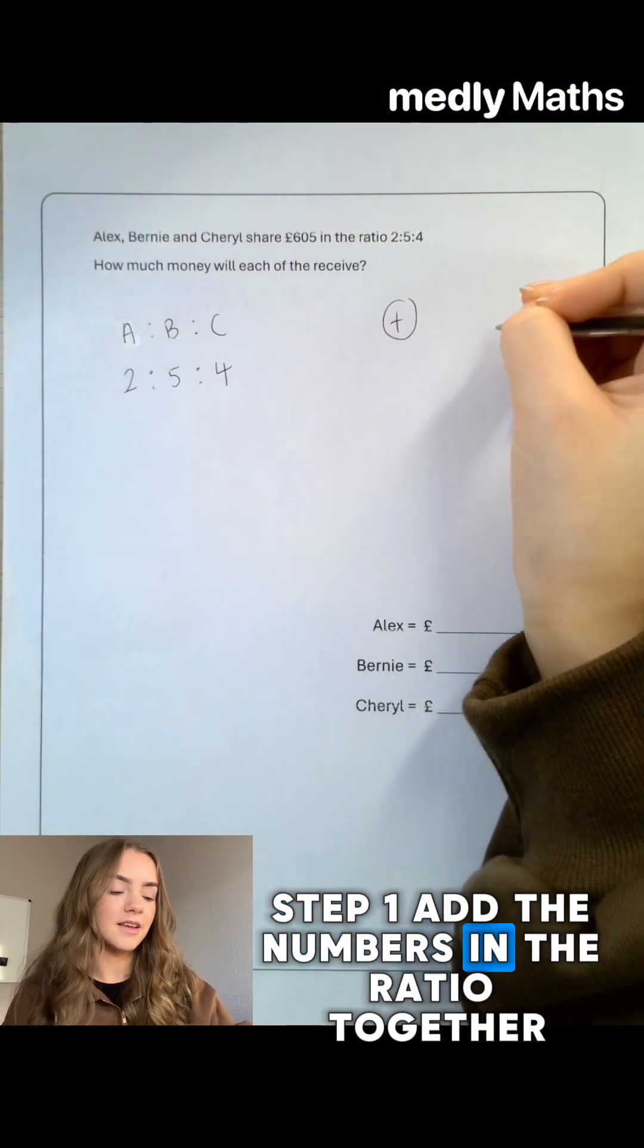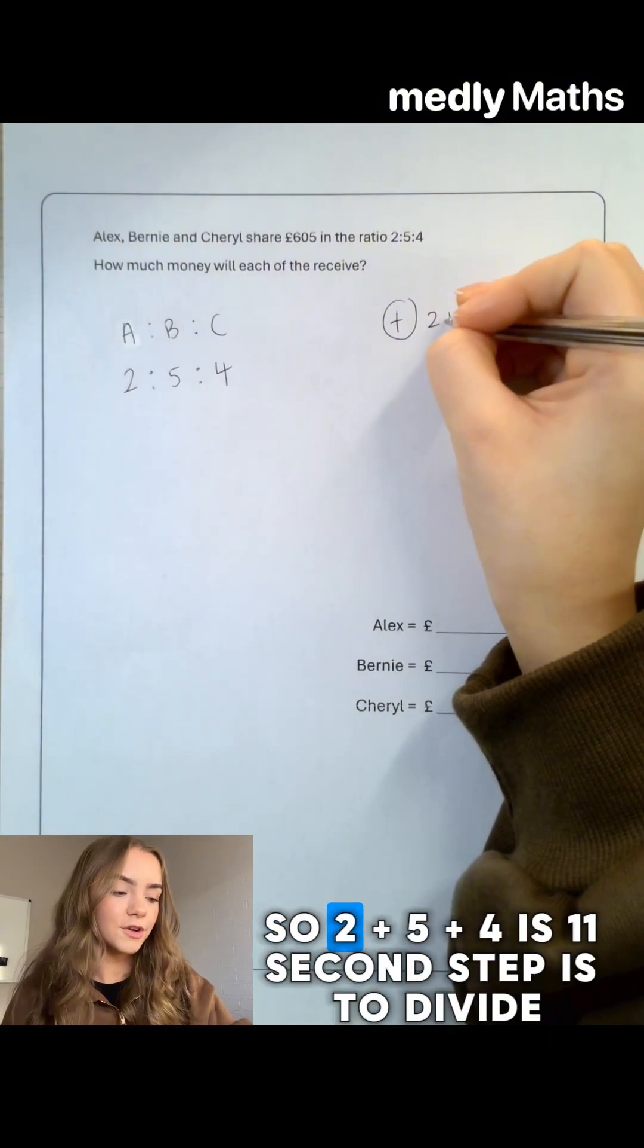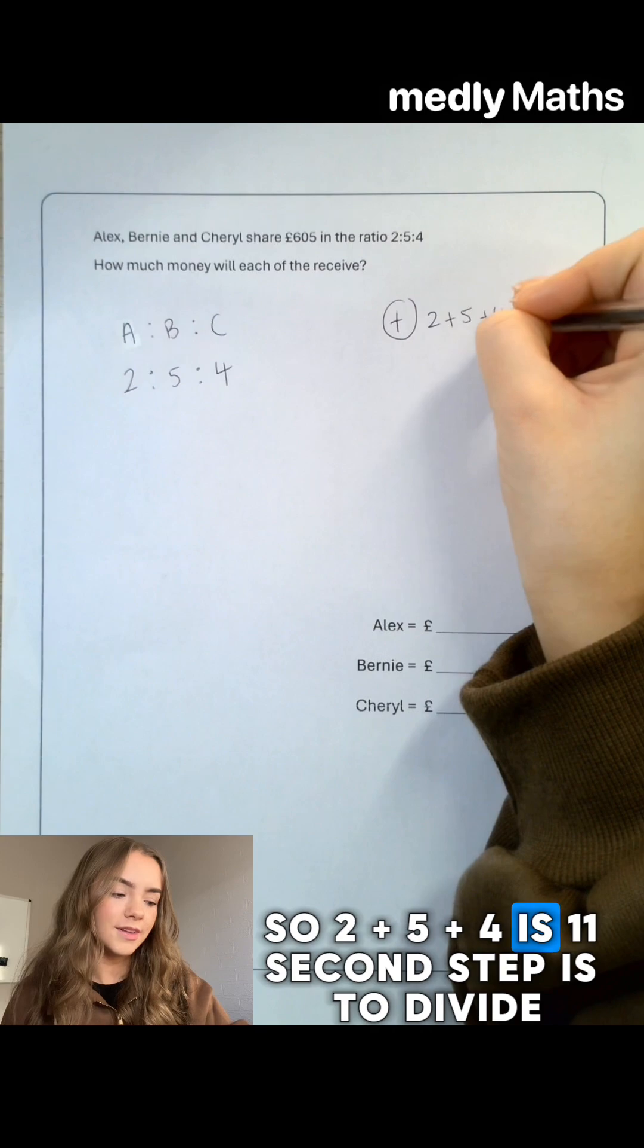Step one, add the numbers in the ratio together. So 2 plus 5 plus 4 is 11.